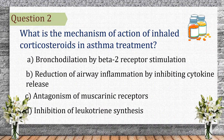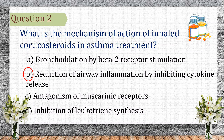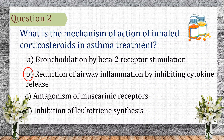Question 2. What is the mechanism of action of inhaled corticosteroids in asthma treatment? The correct answer is B: reduction of airway inflammation by inhibiting cytokine release. Inhaled corticosteroids, like budesonide and fluticasone, work by suppressing inflammation in the lungs, reducing asthma symptoms and preventing exacerbations.